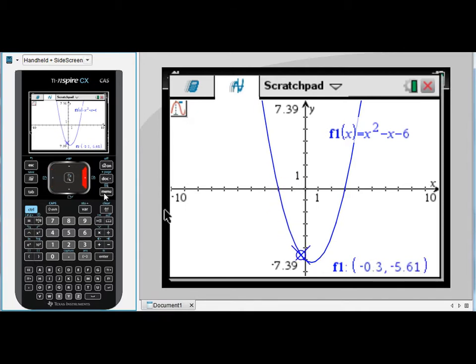It will jump to those key points: the zeros, the y-intercept, the minimum point, zeros again.